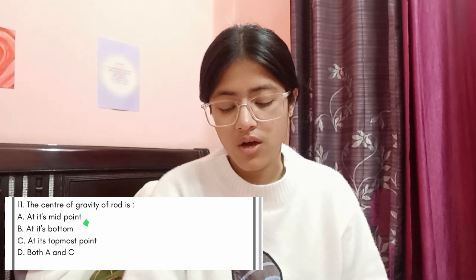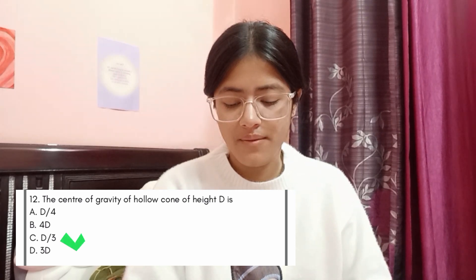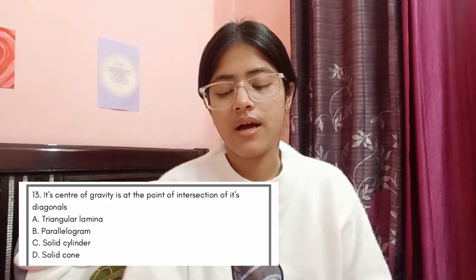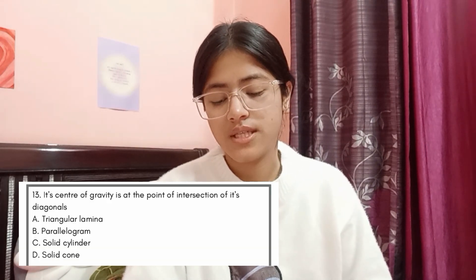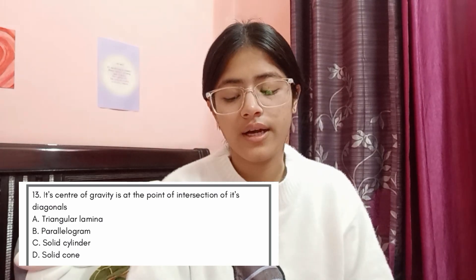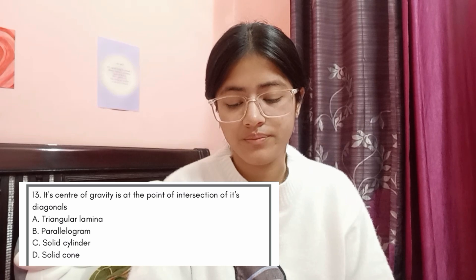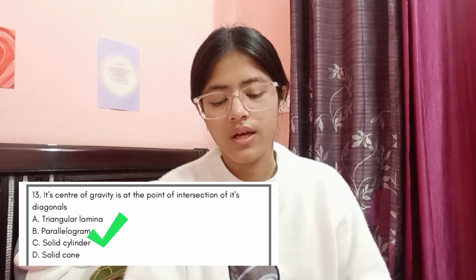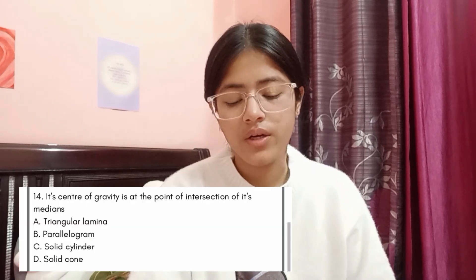Question 11: the center of gravity of a rod is — Option A: at its midpoint, Option B: at its bottom, Option C: at its topmost point, Option D: both A and C. The answer is Option A, at its midpoint. Question 12: the center of gravity of a hollow cone of height d is — the answer is Option C, d/3. Question 13: its center of gravity is at the intersection of its diagonals — identify the shape. Options: A: triangular lamina, B: parallelogram, C: solid cylinder, D: solid cone. The answer is Option B, parallelogram. Question 14: its center of gravity is at the point of intersection of its medians — the answer is Option A, triangular lamina.